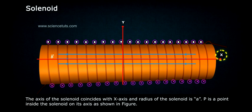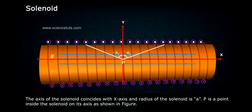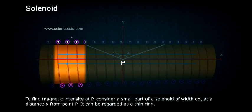The axis of the solenoid coincides with the x-axis and the radius of the solenoid is a. Point P is inside the solenoid on its axis as shown in figure. To find magnetic intensity at P...